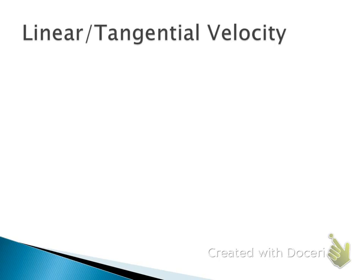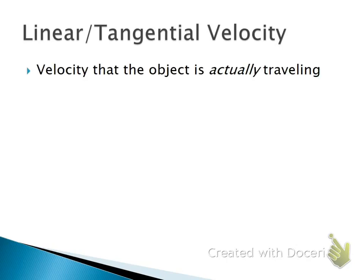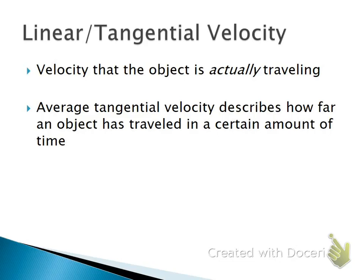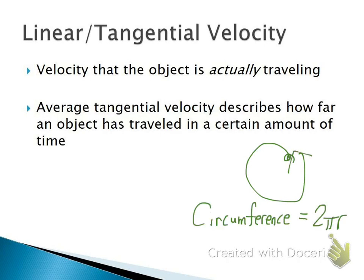Now there's another type of velocity when you're traveling in a circle. It's not just how much of an angle do you cover. We also care about how fast you're actually moving. And that's the good old meters per second that you're used to. That's called the linear or tangential velocity. So it's just distance over time. Now, when I travel in a circle, if I complete one full circle, that full circle is called a circumference. And I know from geometry class that the equation for circumference is two pi r, where r is the radius of the circle.